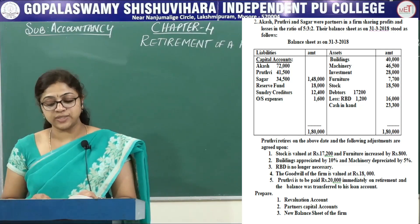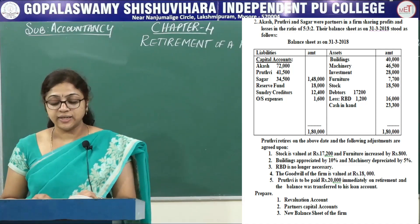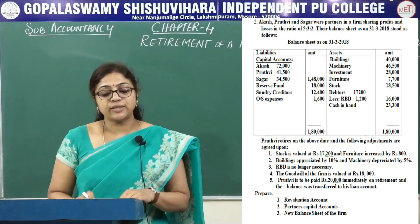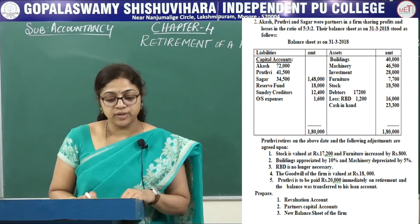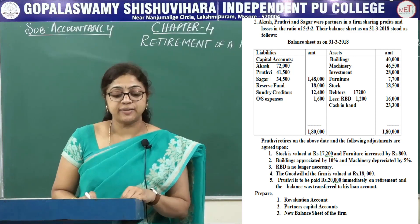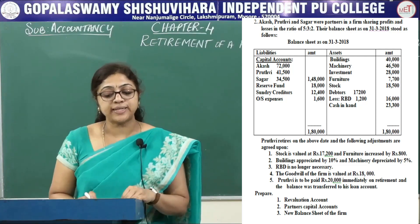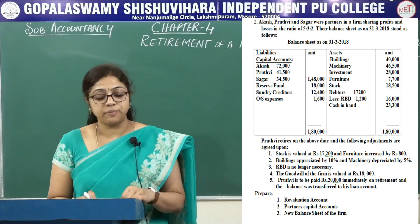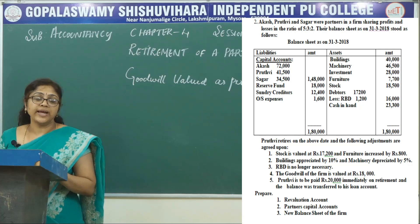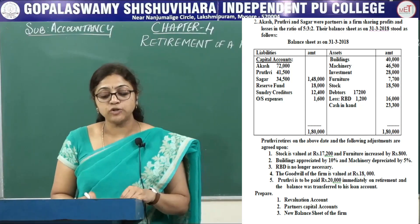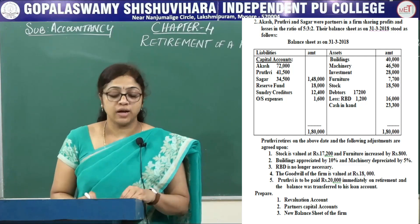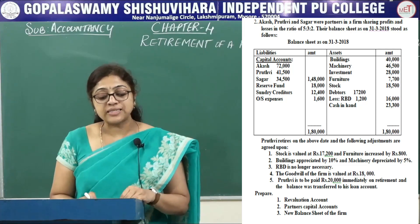On the asset side: building 40,000; machinery 46,500; investments 28,000; furniture 7,700; stock 18,500; sundry debtors 17,200 less RBD 1,200 = 16,000; cash in hand 23,300; total 1,80,000. Adjustments: Prithvi retires on the above date. Stock is valued at 17,200; furniture increased by Rs. 800; building appreciated by 10%; machinery depreciated by 5%; RBD is no longer necessary; goodwill is valued at 18,000. Prithvi is to be paid Rs. 20,000 immediately on retirement and the balance transferred to his loan account.